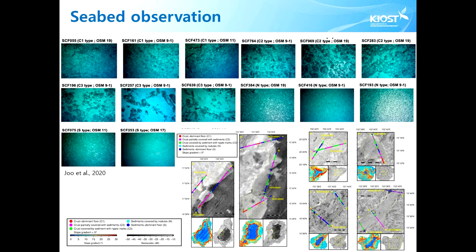However, crust-covered bedrock with sediment is predominant in the center and edge of the type 2 seamount summits. S-type seabed is characterized by ripple populations at the OSM 16 and 18 seamounts. Mixed seafloor types such as C1 and C2 are presumed to be the substrates at the OSM 17 and 19 seamounts. Consolidated sediments with polymetallic nodules are also observed at the boundary between the two different seafloor types, characterized by some seamounts such as OSM 17.